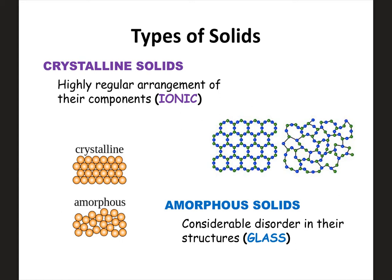An amorphous solid, which would be like glass, has a lot more disorder in the overall structure. It's a solid, but it's not as organized — you wouldn't see this perfectly arranged structure. Just be aware of the difference between these two and a quick example for each.